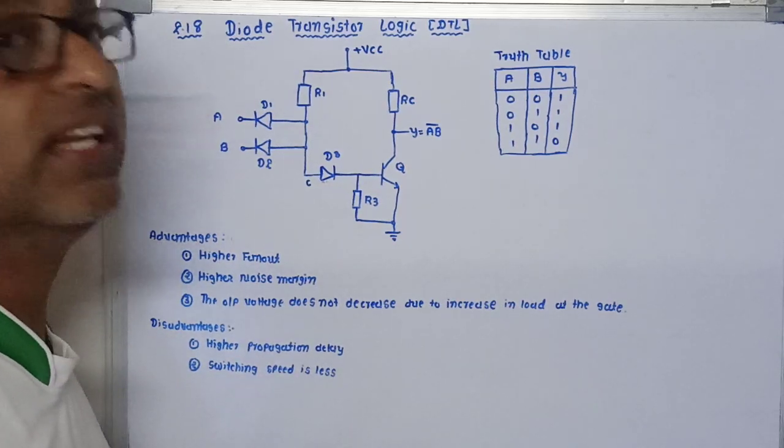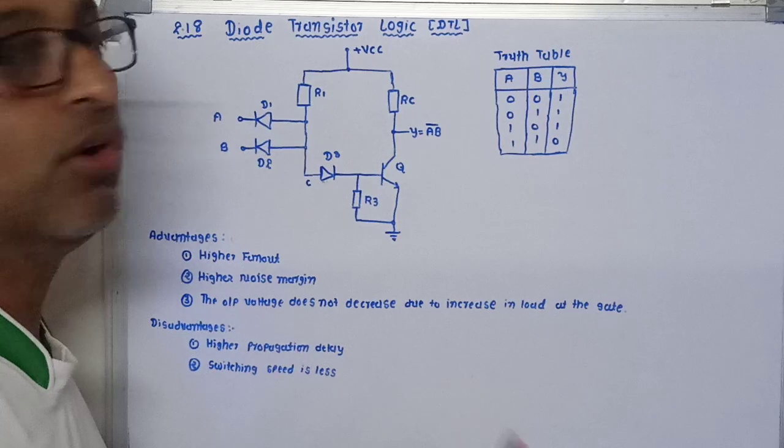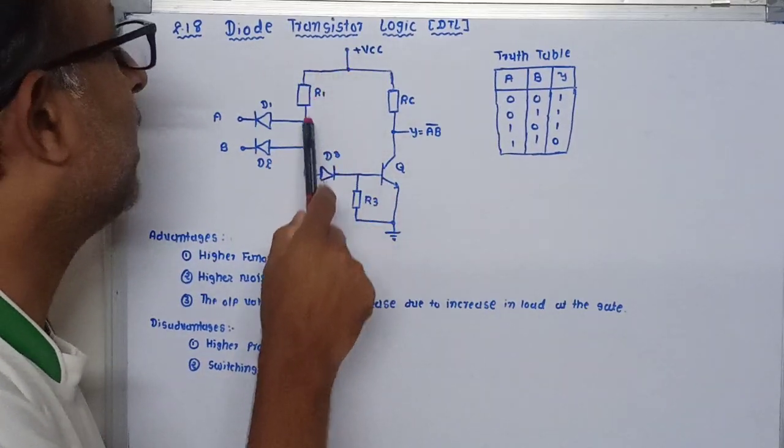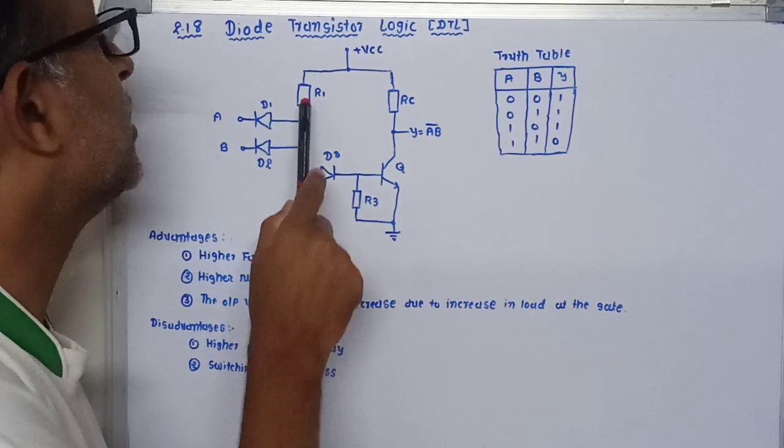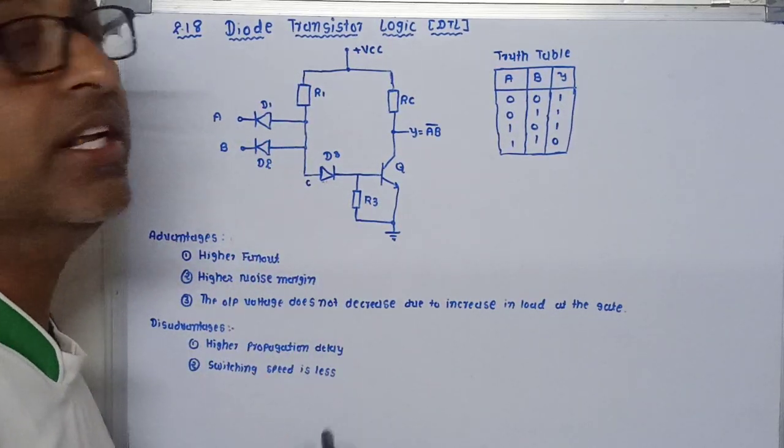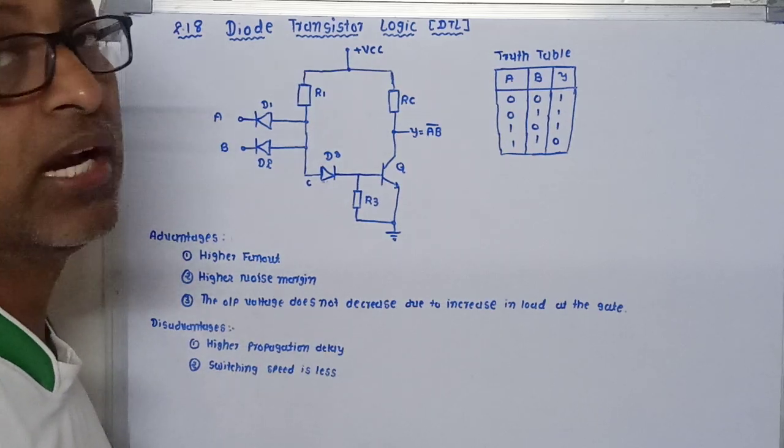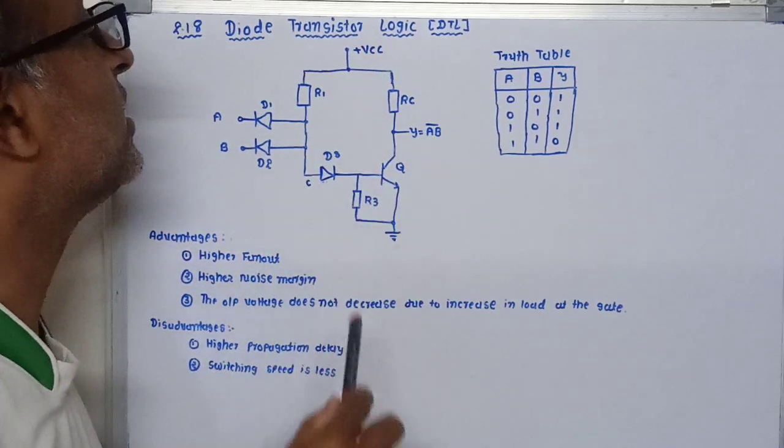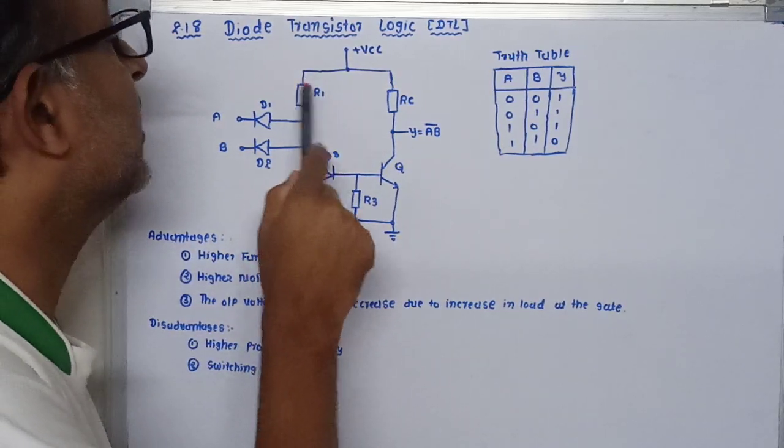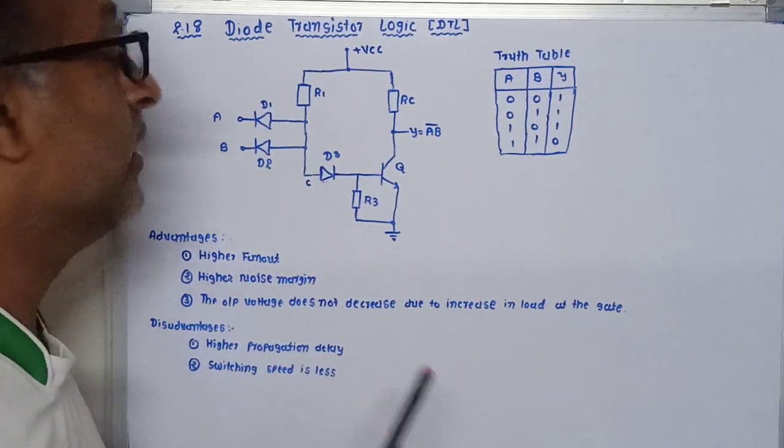That means it is in on condition. The supply voltage VCC gets a path to ground through resistance R1 and diodes D1 and D2. Due to this, the whole applied voltage VCC will ideally drop across resistance R1.